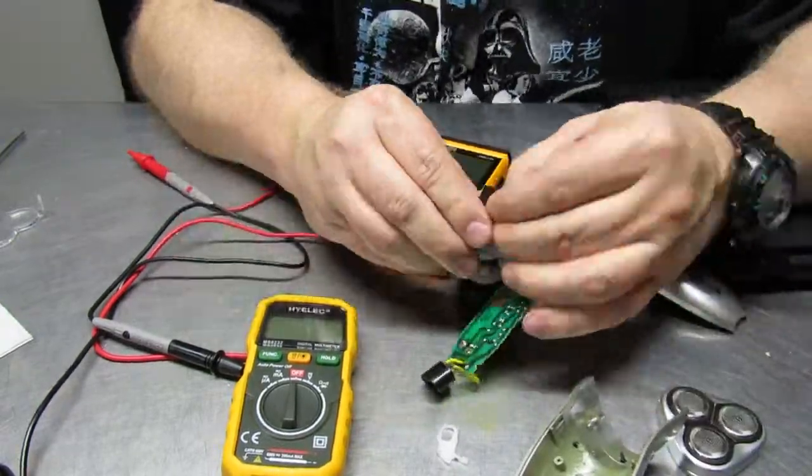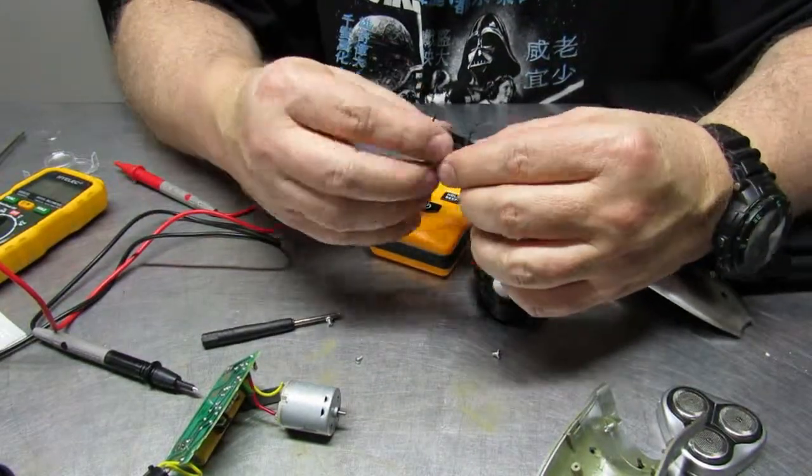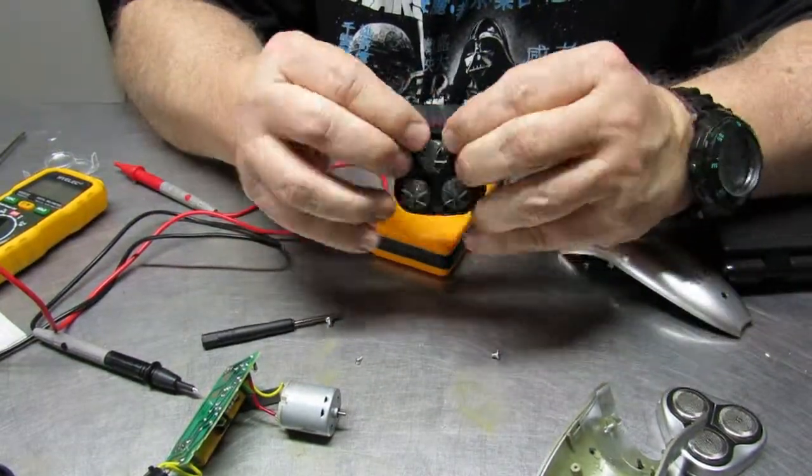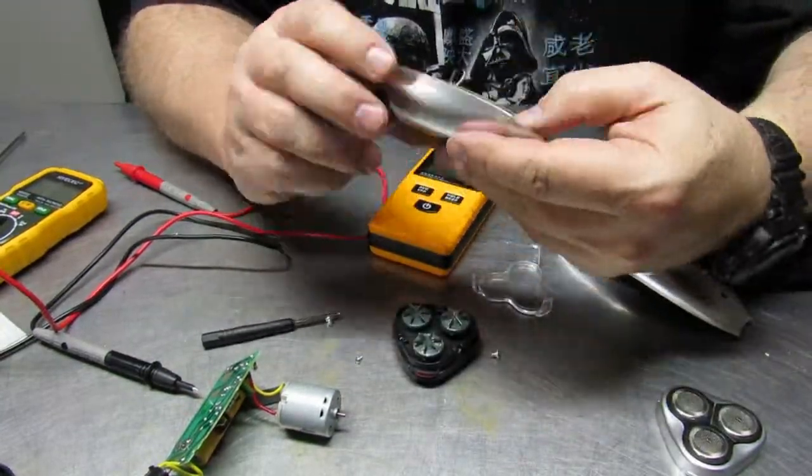Here I'm taking apart the transmission assembly, which in this case takes the simple motor and turns it with some plastic gears into the driver for the three different razor blade heads.